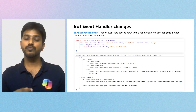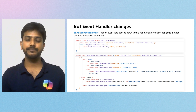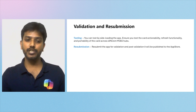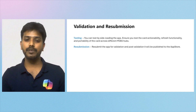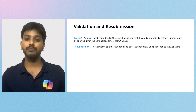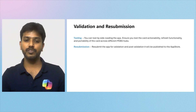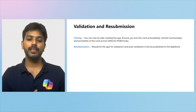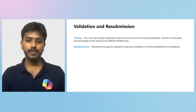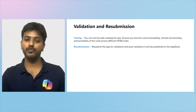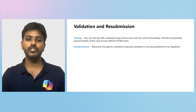The final step was to ensure everything works well by sideloading the app and testing card accessibility, refresh functionality, and accessibility of the card across different Microsoft 365 hubs. I did not resubmit the app for validation as I picked the Work Item Tracker app only for demo purposes, but in your case, you should resubmit the app for validation and publishing.